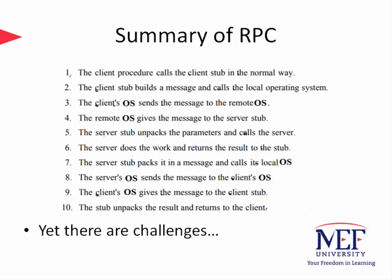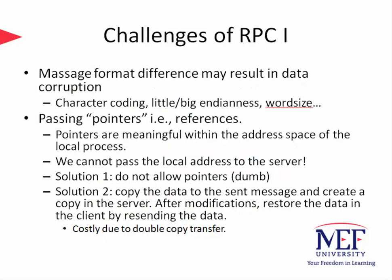Although it seems quite subtle and easy, RPCs have their own challenges due mostly to the heterogeneity of the underlying computers in the distributed system. This includes character coding, little and big-endianness, and word size that may differ from one machine to another. Therefore, when parameters or any data structure are passed to a server, data corruption may occur, and we will end up having wrong results.